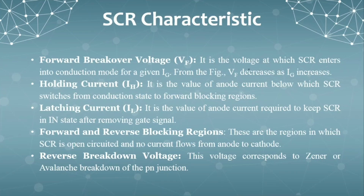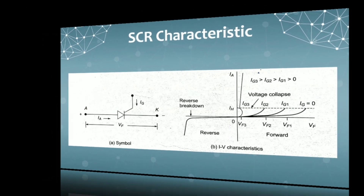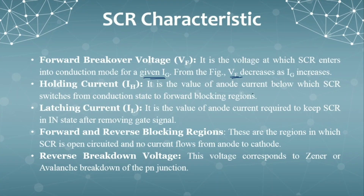Let us see some important definitions. The first one is forward breakover voltage. What is the definition? It is the voltage at which the SCR enters into conduction mode for the given IG. VF decreases as IG increases. Once your SCR reaches the breakover voltage, it turns on — this is the on state.